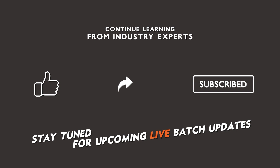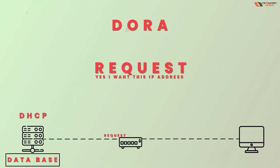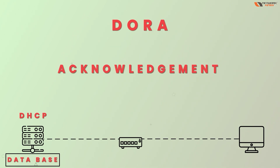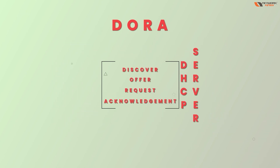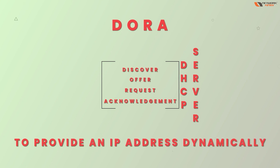Once the DHCP server receives the Request message, it sends an Acknowledgement. These are the four messages — Discover, Offer, Request, and Acknowledge — used by DHCP to provide an IP address dynamically.